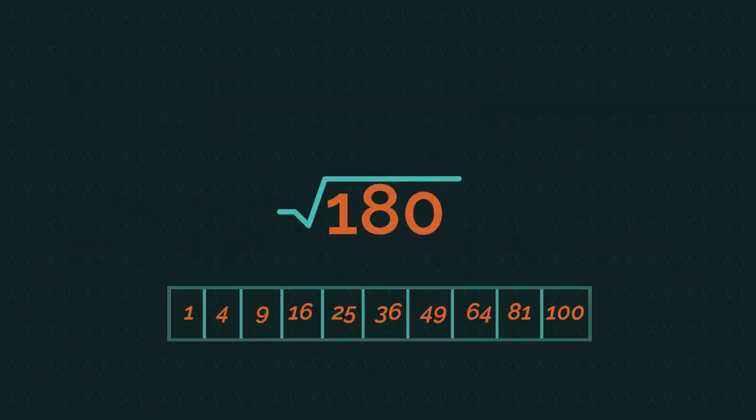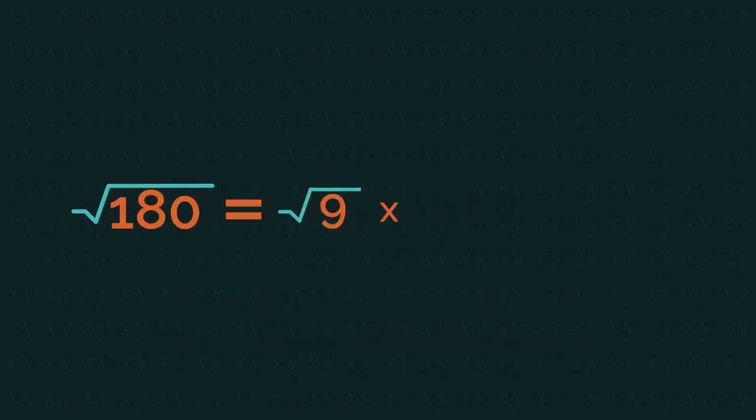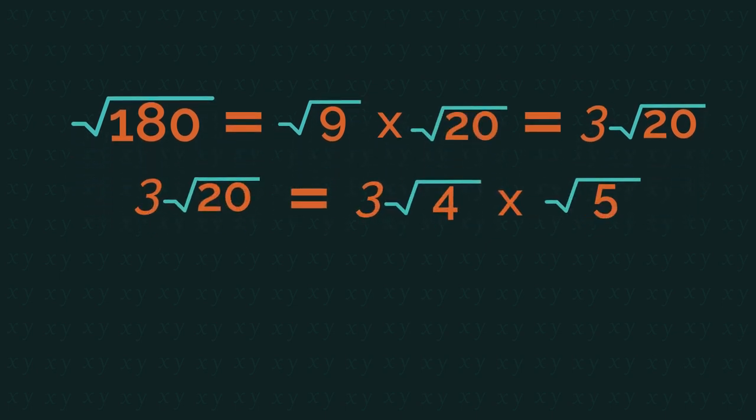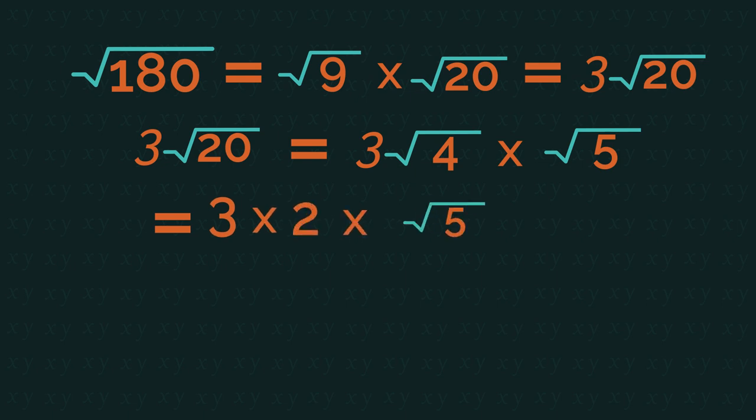Just a quick thing though, root 180, I wouldn't necessarily know that 36 goes into it. But I do know that 9 does. So I could start by simplifying it to root 9 multiplied by root 20. And root 20 isn't fully simplified, so we just keep going. 3 root 4 root 5 and all the way down to 6 root 5.